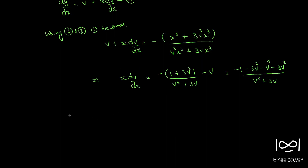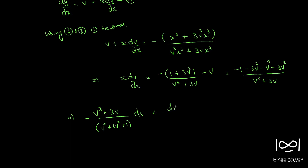Now let's bring all v terms to one side. Taking minus outside, every term becomes positive, giving us (v³ + 3v) / (v⁴ + 6v² + 1) dv = dx/x. So separating variables, we have the v expression on the left and dx/x on the right, ready to integrate.